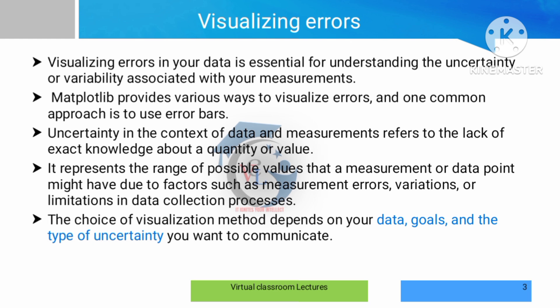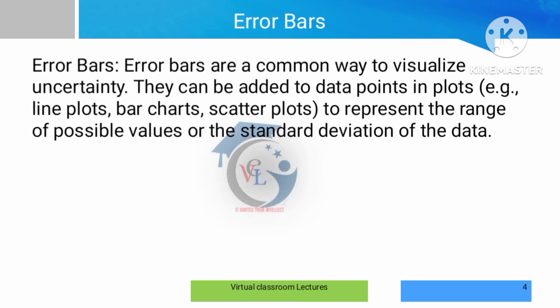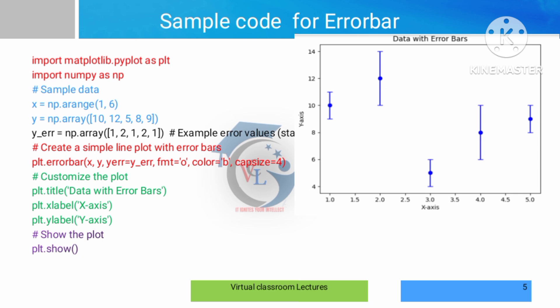When there is some lacking knowledge, that means definitely uncertainty. We can create an error. The error bar is one type: we have a normal plot with a dot, and the dot shows the error. This applies to line plots, bar plots, and scatter plots.